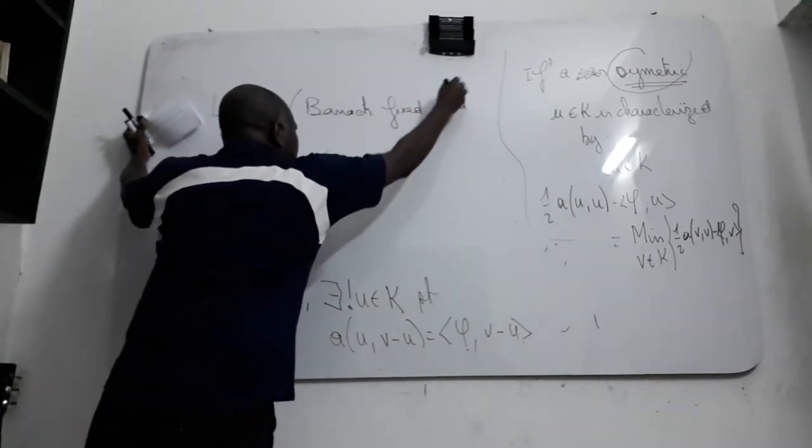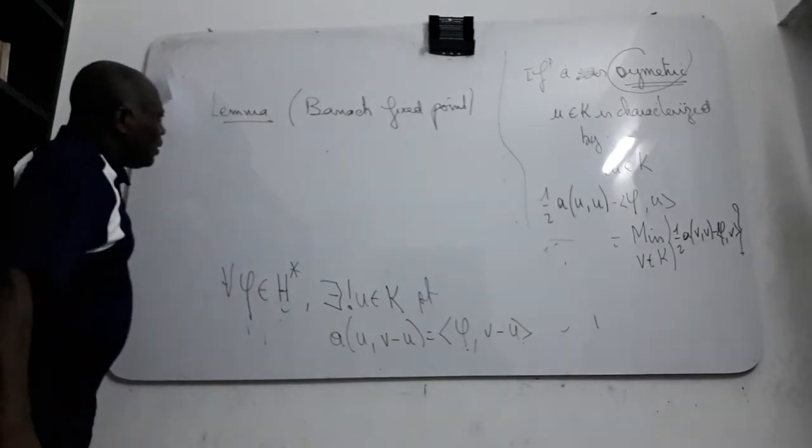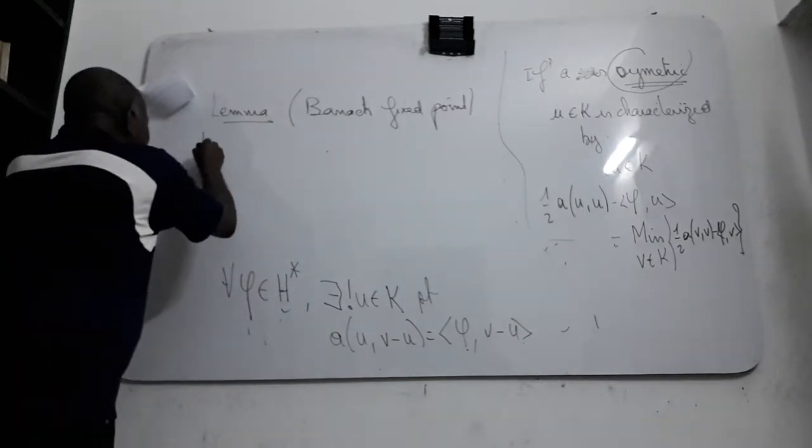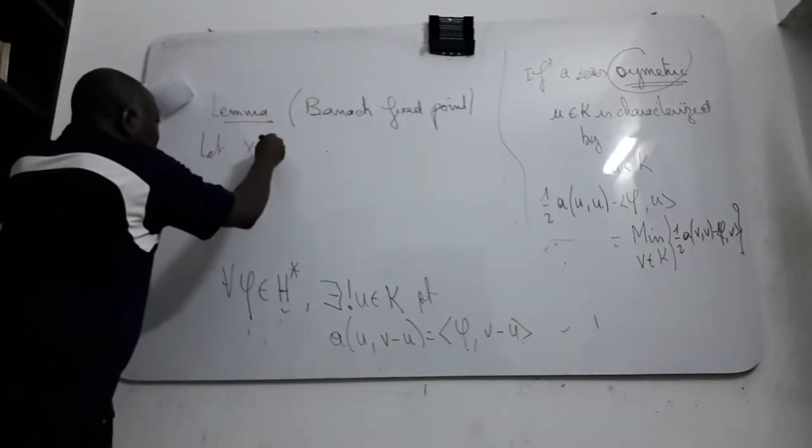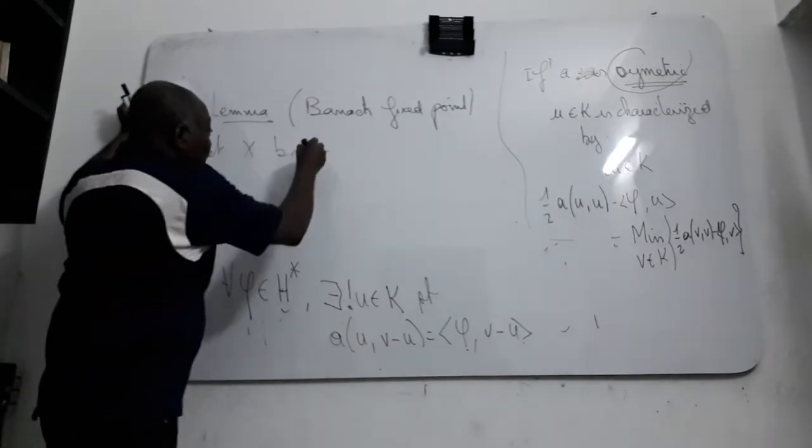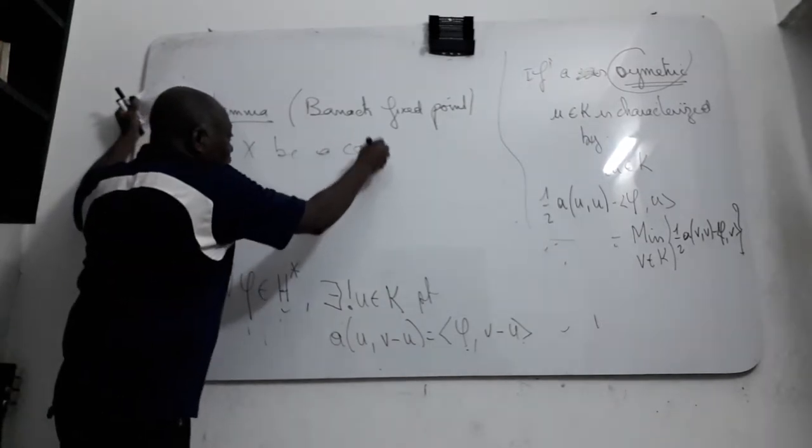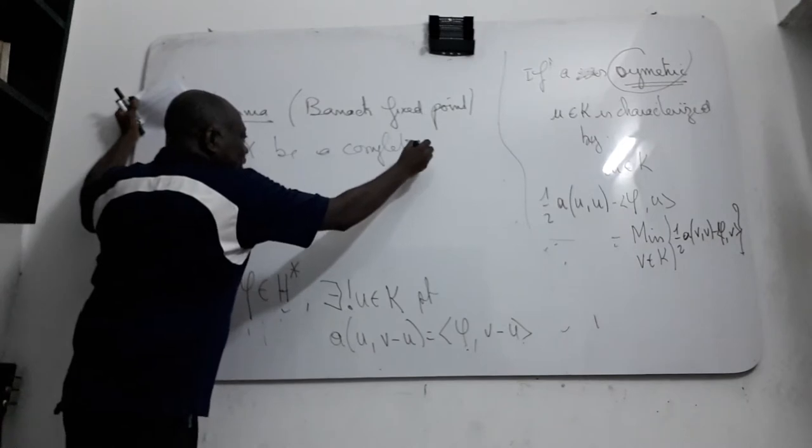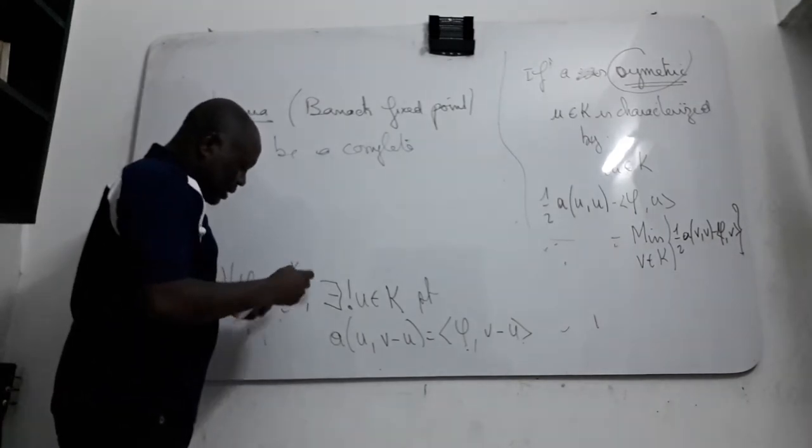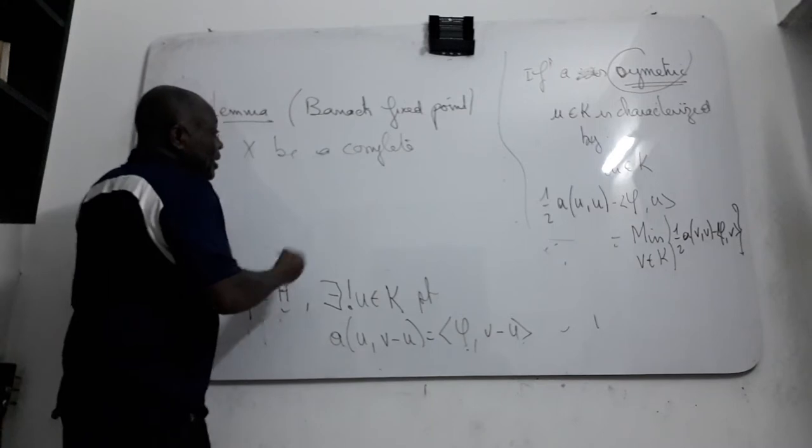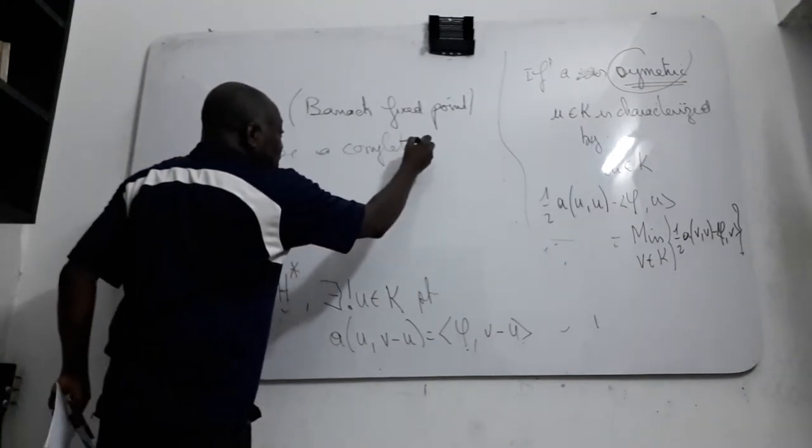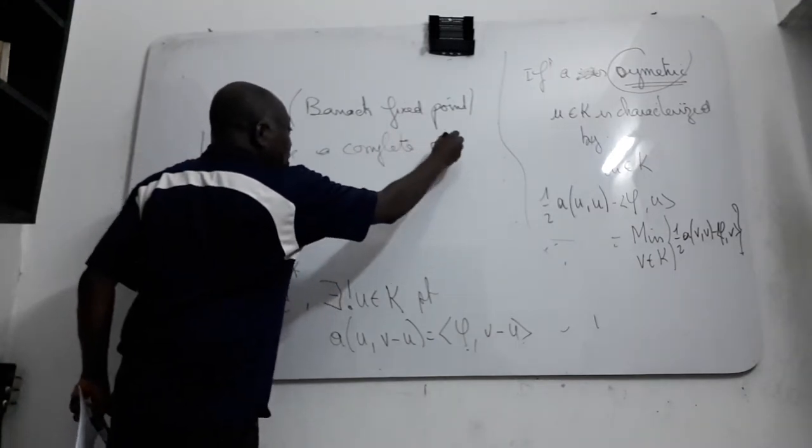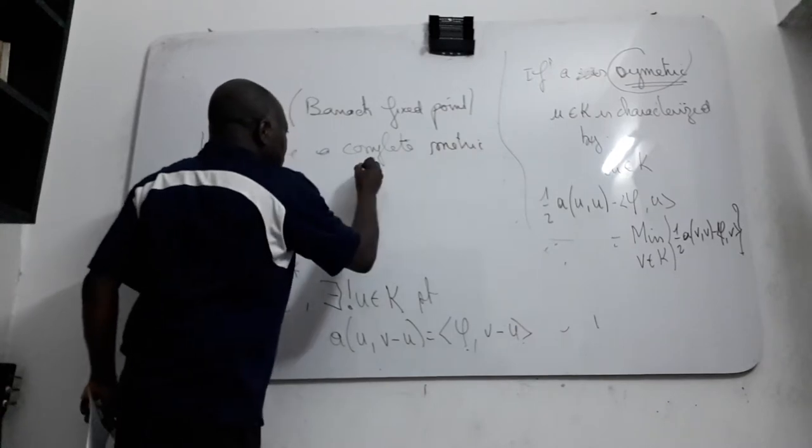So you say that let X be a metric space, a complete metric space. I will change my marker. A complete metric space, like this.